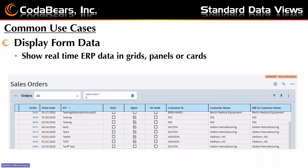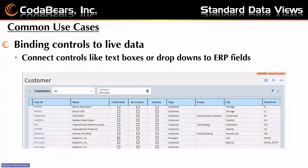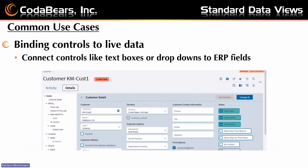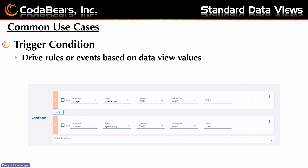Data views are also used for binding controls to live data — they connect controls like text boxes or dropdowns to ERP fields. Here on the customer page, when you type in the customer you want, it uses the data view to link and pull out the information depending on what you typed in. Another use case is trigger conditions: they drive rules or events based on data view values. In the data rules section of Application Studio, you choose the data view, the field, and then the value, and that triggers something else — either a rule or an event. They're very useful in all those different scenarios.